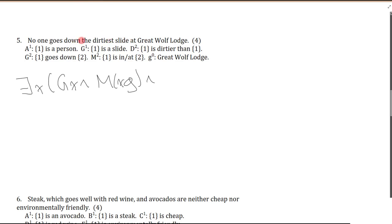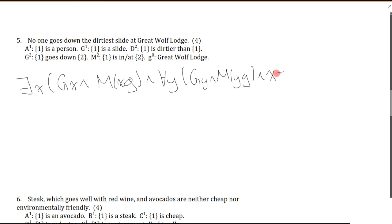Now the relational part: it's not just that there is a slide at Great Wolf Lodge — this slide is the dirtiest. So I invoke the standard superlative using Y: for every slide at Great Wolf Lodge that is also not equal to the slide I'm talking about (X), then X is dirtier than Y.